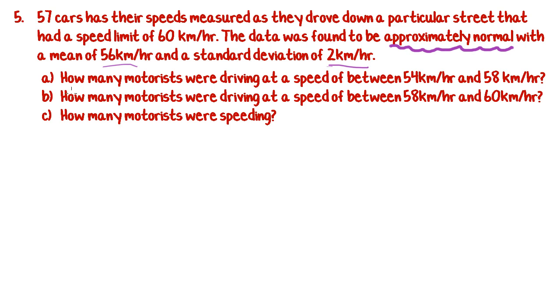So part A. How many motorists were driving at a speed between 54 and 58 km an hour? Let's start by drawing a bell curve and putting the mean in the middle. The mean was 56. We've got standard deviations of 2 either side. So if we go down 2, we get to 54. And if we go up 2, we get to 58. So before I even need to put anything else on the graph, I've already found 54 and 58.